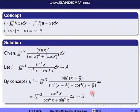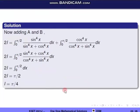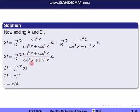Adding the two expressions: 2I = integral from 0 to π/2 of [sin⁴x/(sin⁴x + cos⁴x) + cos⁴x/(cos⁴x + sin⁴x)] dx = integral from 0 to π/2 of 1 dx = [x] from 0 to π/2 = π/2. Therefore I = π/4.